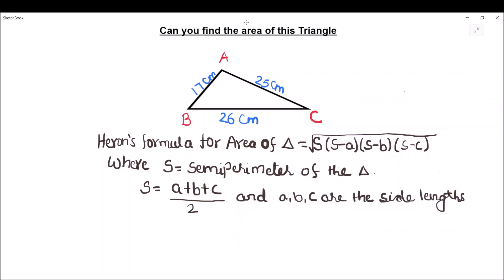For finding the area of the triangle we need to first find the semi-perimeter. So semi-perimeter s is equal to a plus b plus c, which is 17 centimeters plus 25 centimeters plus 26 centimeters, divided by 2.